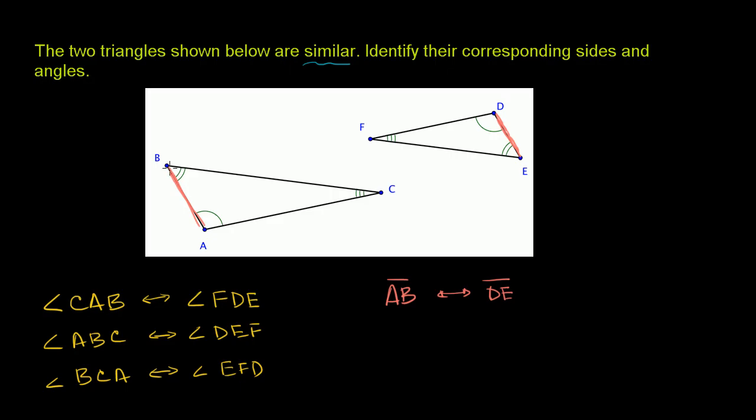Then if we look at BC right over here, BC corresponds to, it's between the two bars and the three bars. Between the two bars and the three bars. It corresponds to EF.